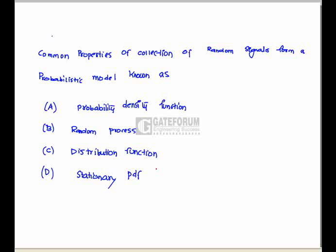Common properties of collection of random signals form a probabilistic model known as a random process. This is option b is correct.